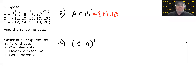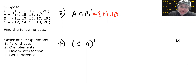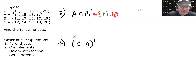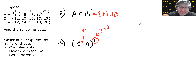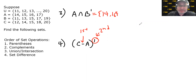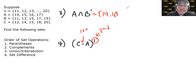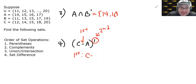Let's figure out the order for example 4: (C-A)'. Set difference is last in the order of set operations. However, parentheses are first — so we look inside the parentheses. The only operation in there is the minus, so that happens first. Then outside the parentheses is a complement, so that happens second. It's very important not to go to the complement first just because it's higher in the order — parentheses trump it.